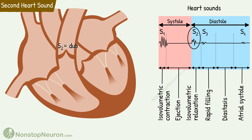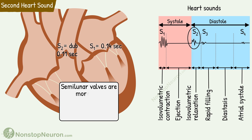This sound resembles a spoken word 'dub.' Its duration is about 0.11 seconds, which is shorter than the duration of the first heart sound, which is 0.14 seconds long. The reason is the semilunar valves are more taut than atrioventricular valves, so they vibrate for a shorter time than do the atrioventricular valves.